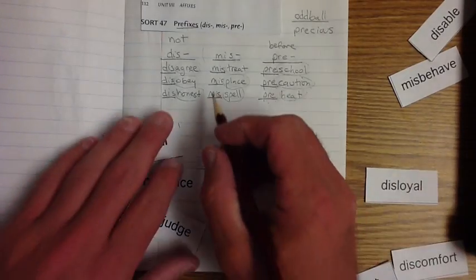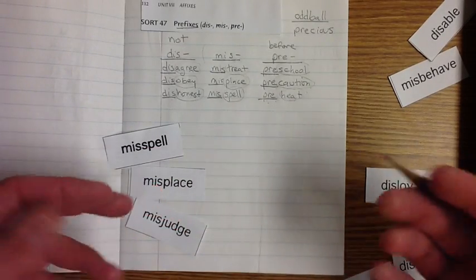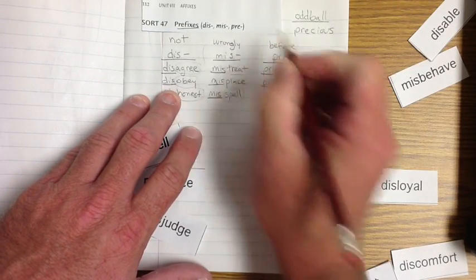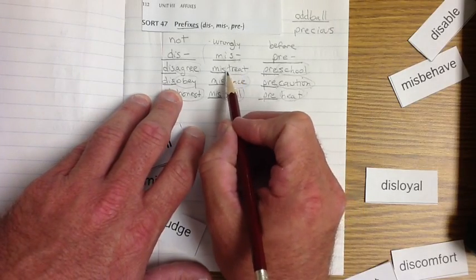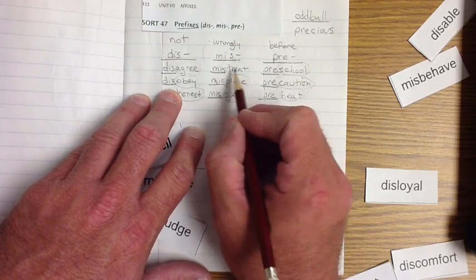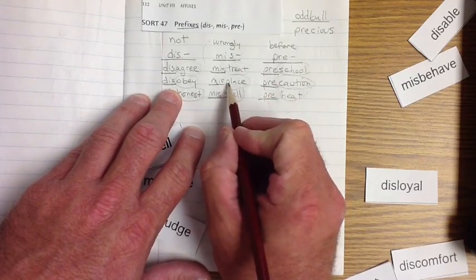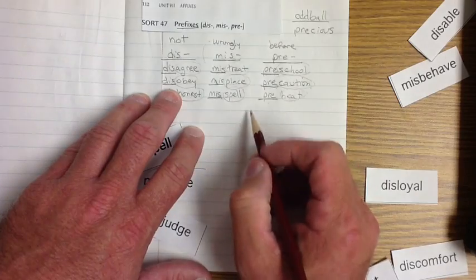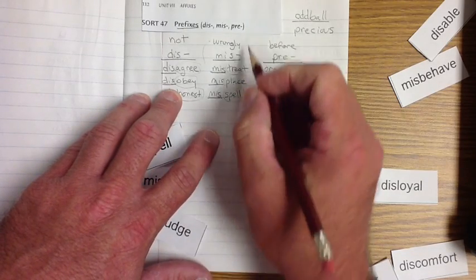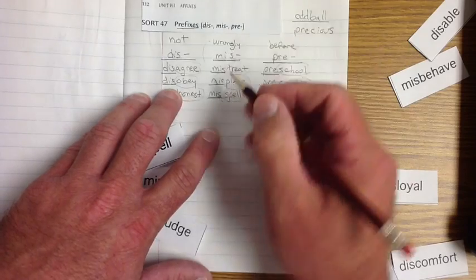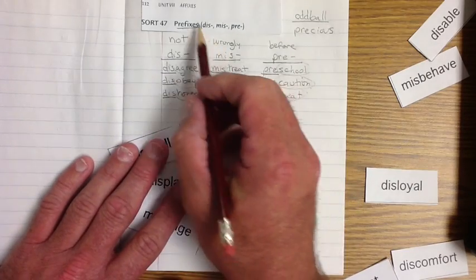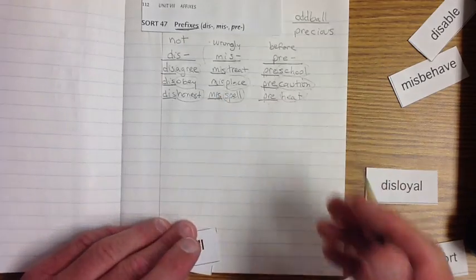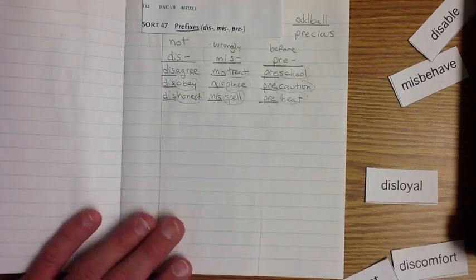Misspell means to spell it wrong. So it's wrongly. If we do this, we are treating something wrongly. We mistreat. If we misplace, we've placed it wrongly. We put it somewhere we should not have. If we misspell, we spelled it wrongly. So when we misspell something, since it is a prefix, we have to have both S's in there to show that it is the prefix and the root word.